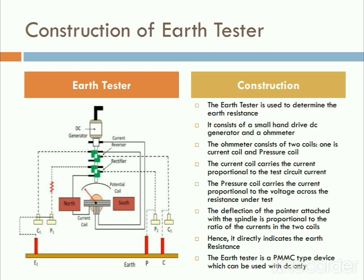The deflection of the pointer is proportional to the ratio of the currents in the two coils. The spindle deflection is determined by the interaction of the current coil and the pressure coil.